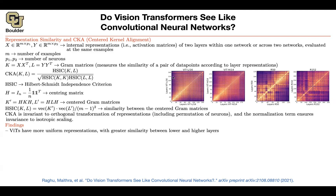You still see some bright colors throughout. The checkerboard pattern appears because in the transformer architecture, you have an attention mechanism, on top of which you have a fully connected layer, and then a residual connection. Whenever layers are less similar, it's because of those fully connected layers. But every once in a while they end up being very similar to each other.